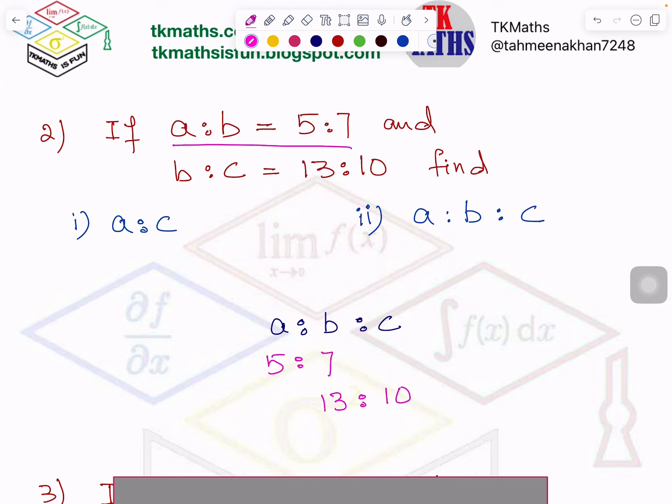But you are a student of year 7, you are not allowed. But I can use it. Anyway. So because it is not same, 7 and 13, which are the values of b, ratios of b, so I have to make it same. What is the technique I told you? You will multiply this by what? 13. Right. And you will multiply this by what? 7.